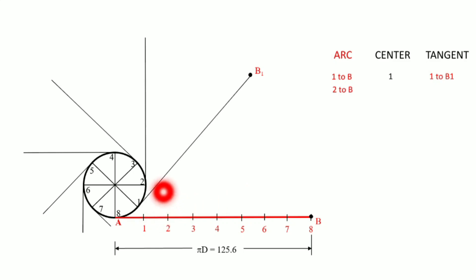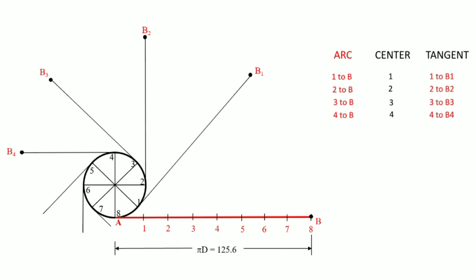When point 2 overlaps with point 2 on the circumference, the remaining length on the tangent equals the distance from point 2 to B on the thread. We take this distance in the compass and cut an arc from point 2 along its tangent line to get point B2. Similarly, we take distance 3 to B and mark it from point 3 on its tangent to get B3, then 4 to B gives B4. Continue this process to get B5, B6, B7, and finally B8.